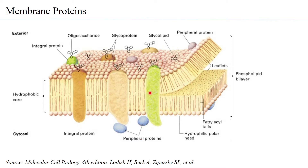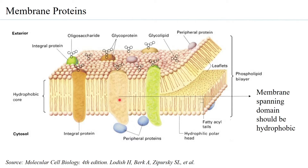Many integral proteins are transmembrane proteins. These proteins are folded such that they have an extracellular domain, a membrane-spanning domain, and an intracellular domain. Any integral protein must have a membrane-spanning domain, and that domain must be hydrophobic so it can interact with the surrounding lipid molecules in the bilipid layer. This is how membrane proteins are found as either extrinsic or integral proteins.